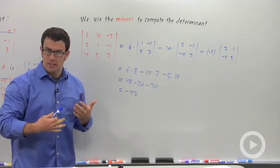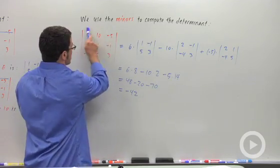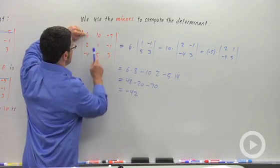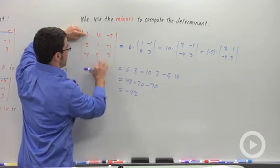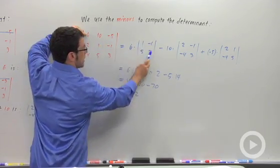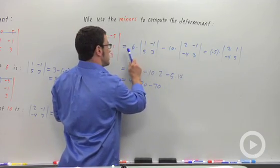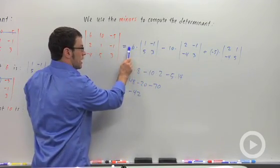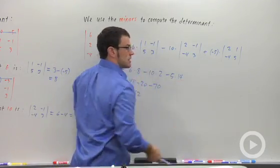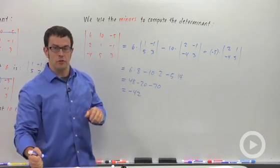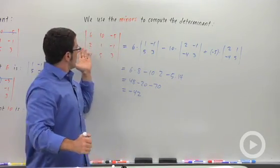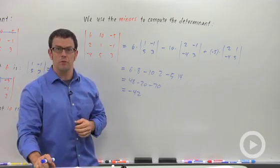Again, the process is basically, I started with the top row, and I took each of these values. 6, 10, negative 5, and I found its minor, right? This is the minor for 6. And I add them up, only I use opposite signs. I start with a plus, then I go minus, then I go plus. And I'll give some more specifics in a future lesson about how you do that when you expand along a row other than the first row.